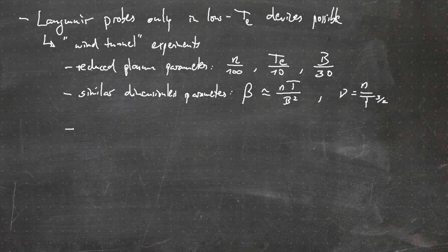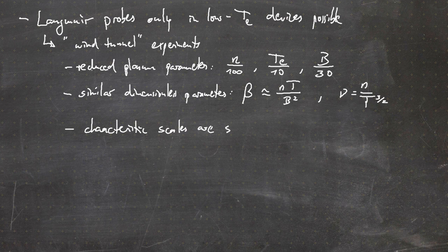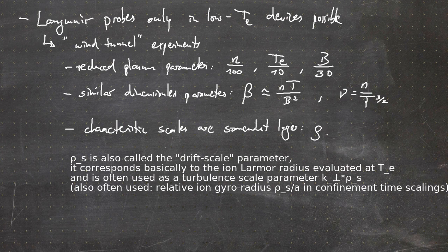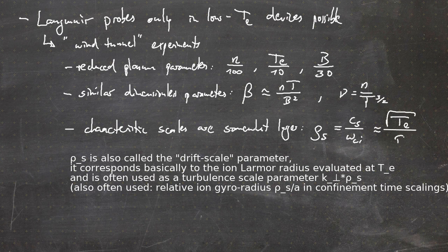Despite the reduced set of plasma parameters, there are some similar dimensionless parameters. These include the plasma beta, which can be approximated by n times T over B squared, and nu, given by density over temperature to the power of three-halves. An important characteristic scale for turbulence is rho_s — the sound speed c_s over the ion cyclotron frequency — corresponding approximately to the square root of the electron temperature over the magnetic field, and roughly defining the size of turbulent structures.